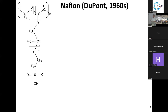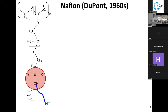Nafion's main chain is polytetrafluoroethylene — PTFE, or Teflon — which is very stable, chemically inert, and very hydrophobic. To make it ion-specific, it is modified: every monomer has a side group terminated with a sulfonic acid group. This sulfonate group can be ionized in a water environment, releasing protons and acquiring a negative charge.